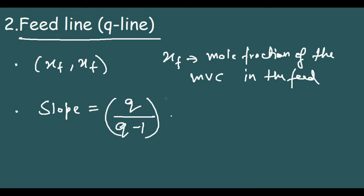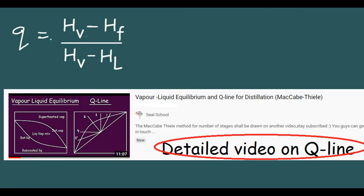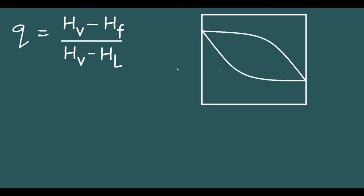To find Q, we need to know the properties of the feed entering the column. Q is defined as Q equals HV minus HF divided by HV minus HL, where HV is the enthalpy of the vapor, HF is the enthalpy of the feed, and HL is the enthalpy of the liquid.